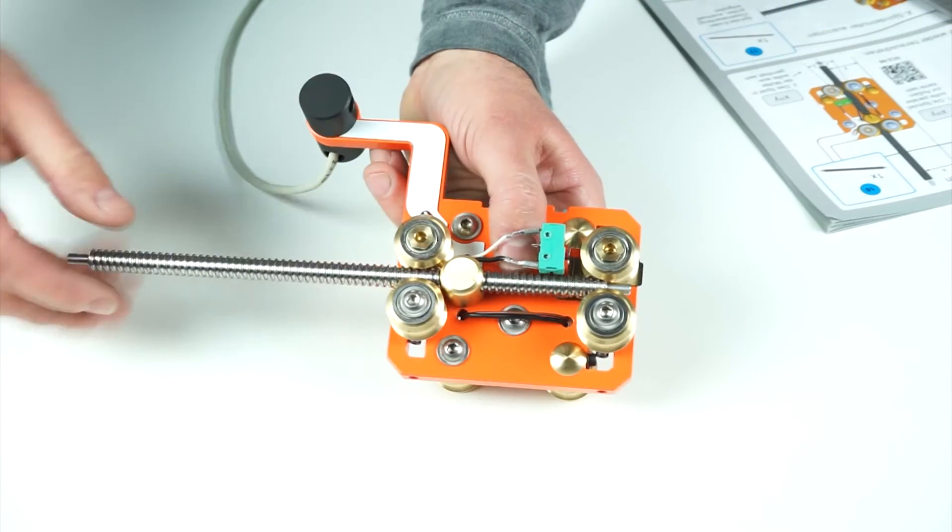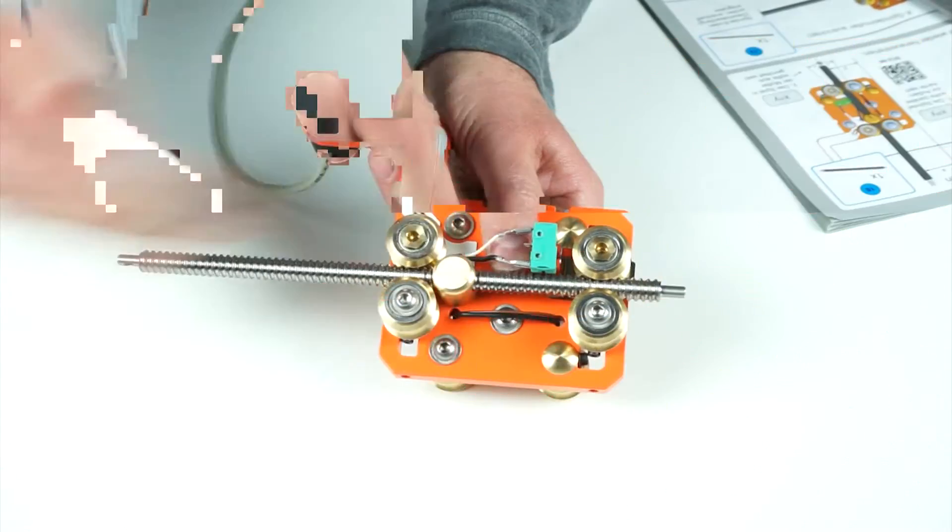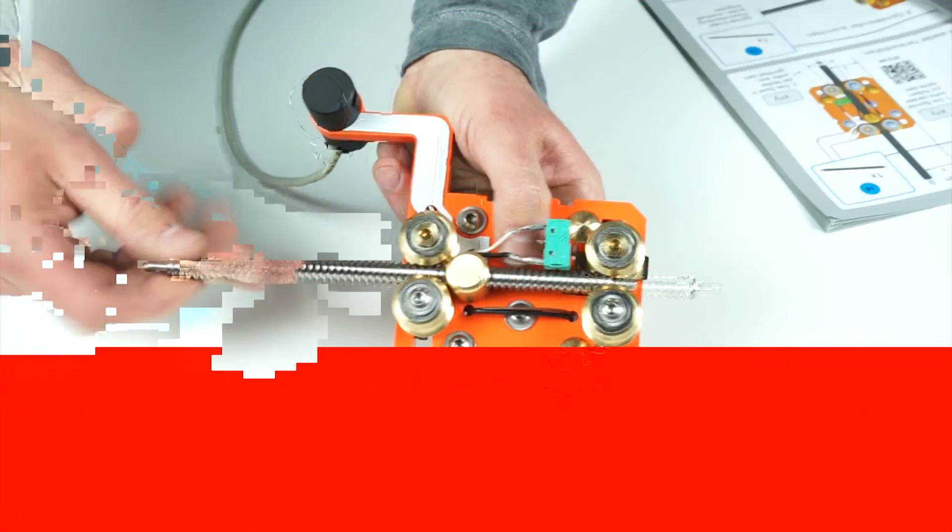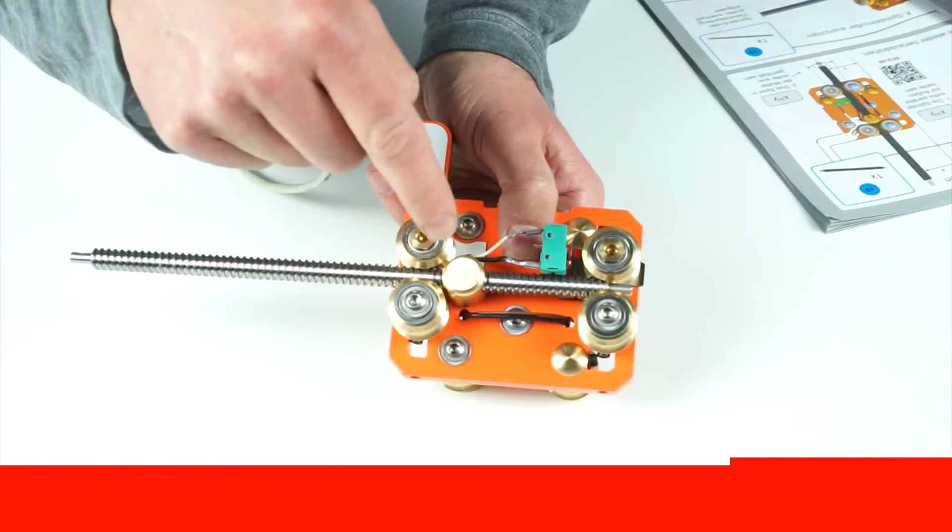Place the whole assembly on the flat surface. Measure both sides of the lead screw nut using a caliper or a ruler. The goal is to have both sides be even.